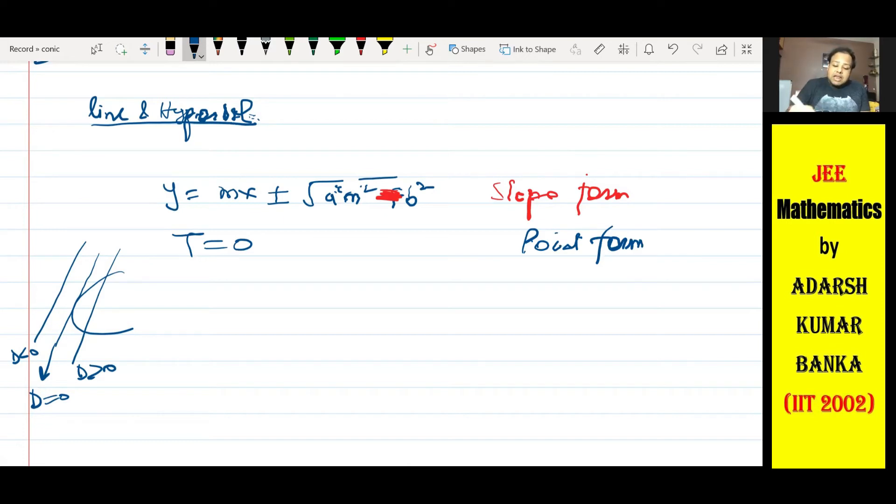Agar standard wale hyperbola ki baat karay, so xx1 by a square minus yy1 by b square equals one. Conic ka.